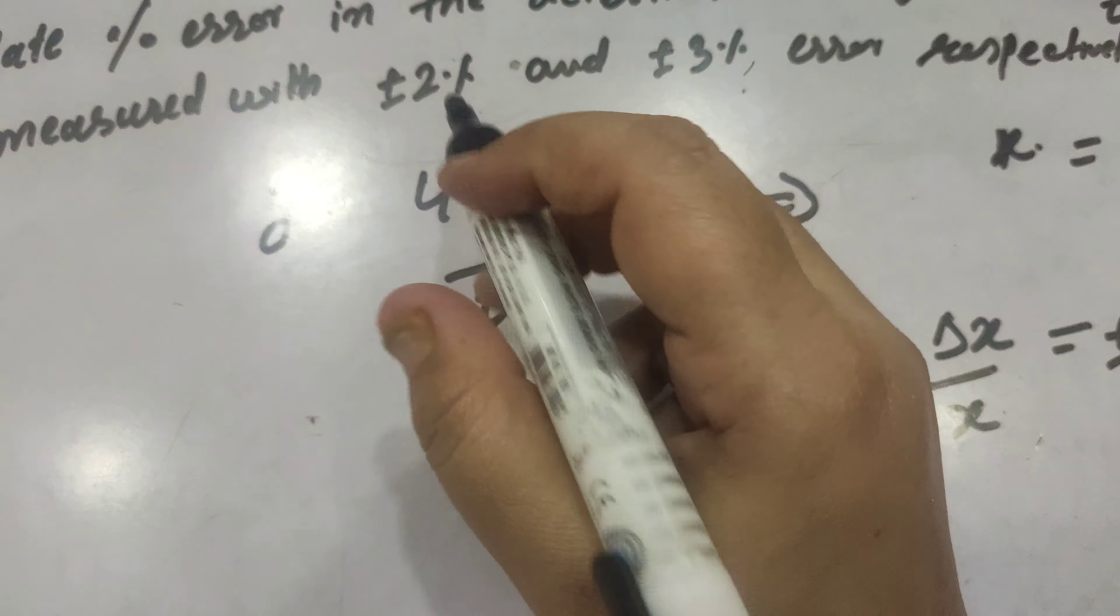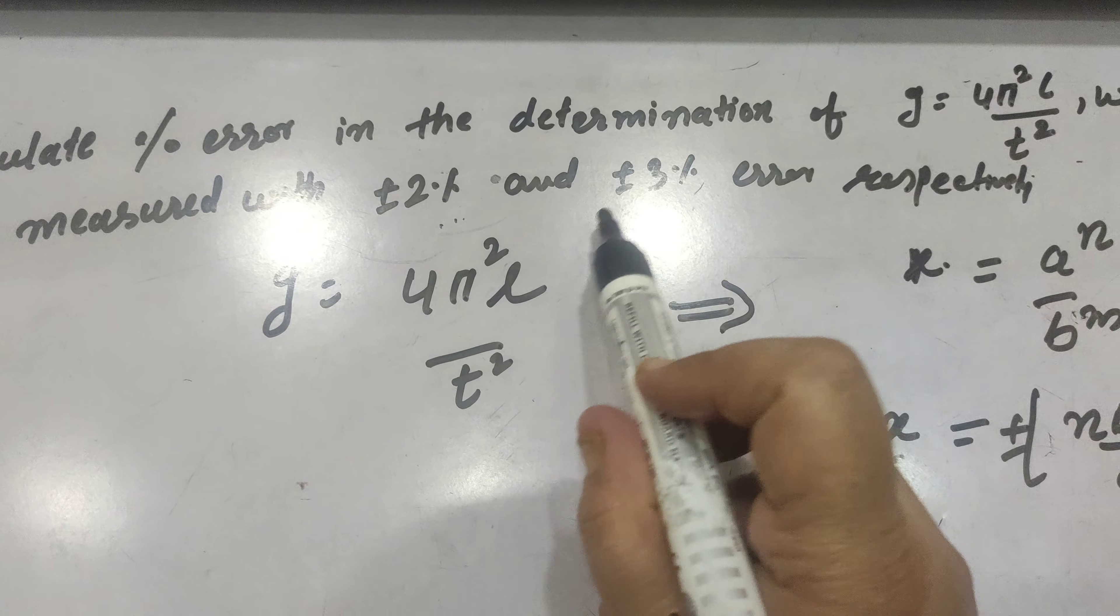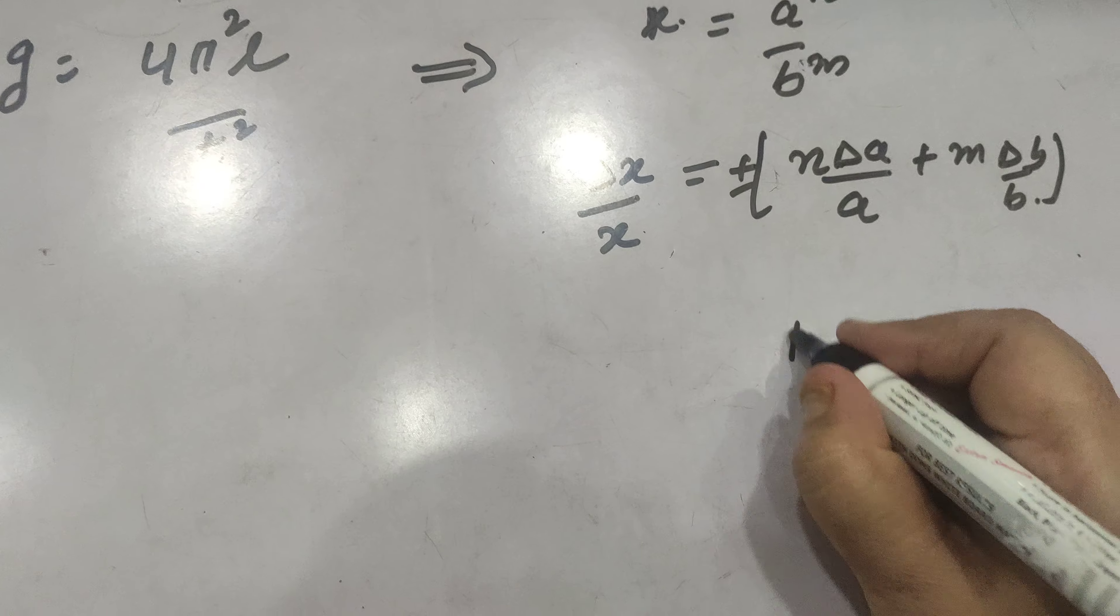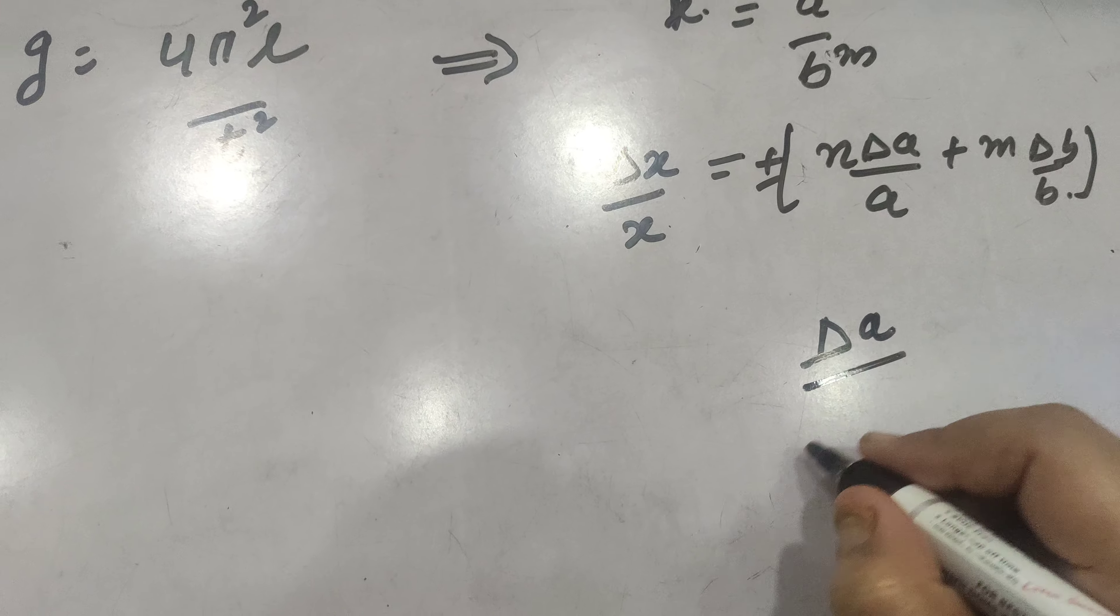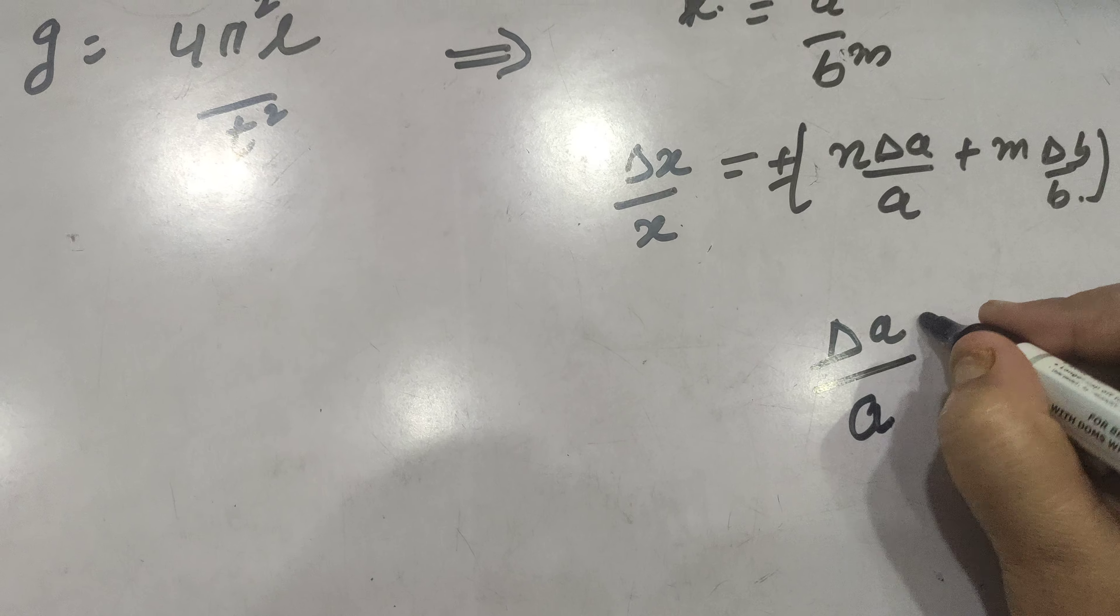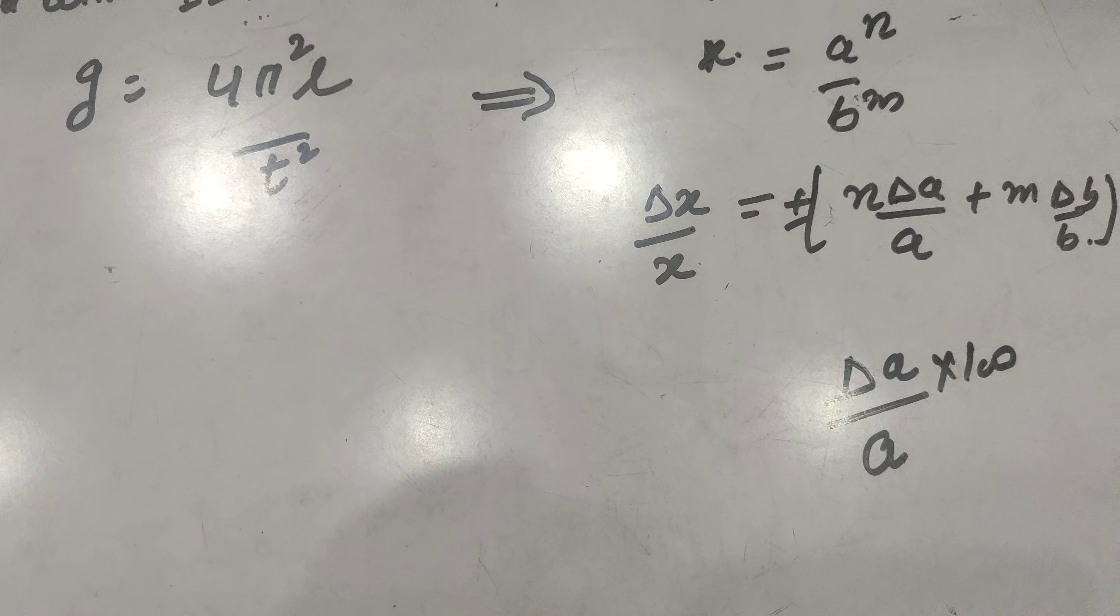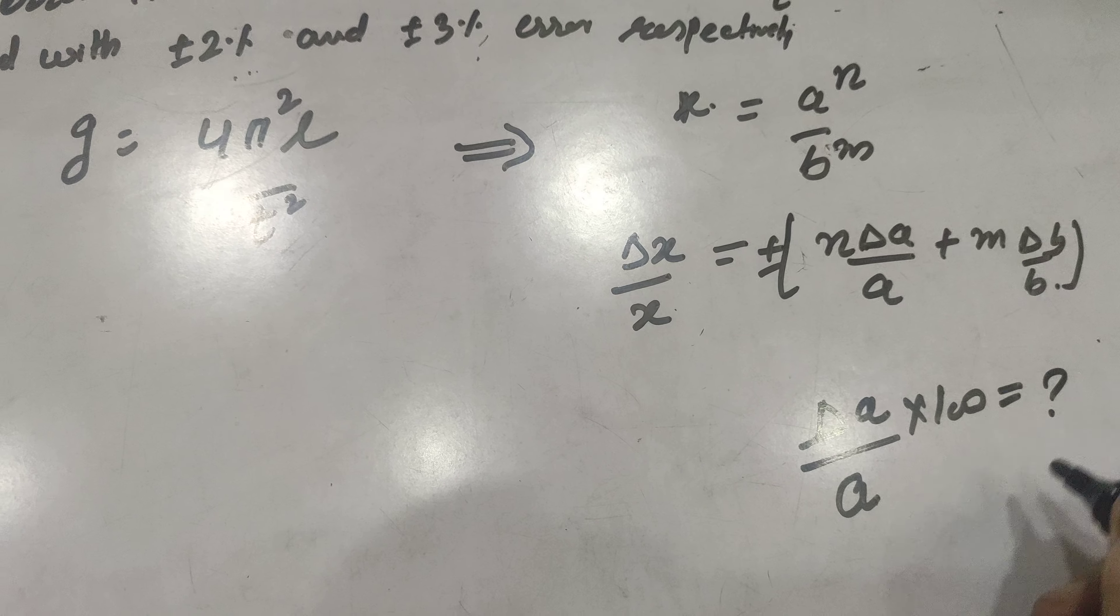Take attention that here the percentage errors are given. Percentage error we know that is absolute mean absolute error upon mean value into 100. So this value is given to you.